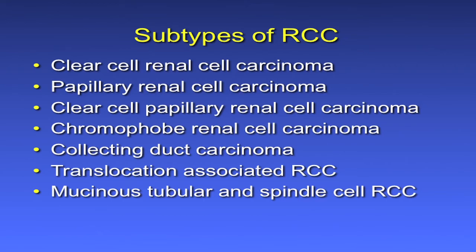Since hypernephroma, our classification system has changed dramatically. We've added a number of new entities, some increasing in frequency as we're recognizing them more often. Clear cell, papillary, and chromophobe clearly make up the majority of tumors we'll see, but it's important that we recognize these other variants.